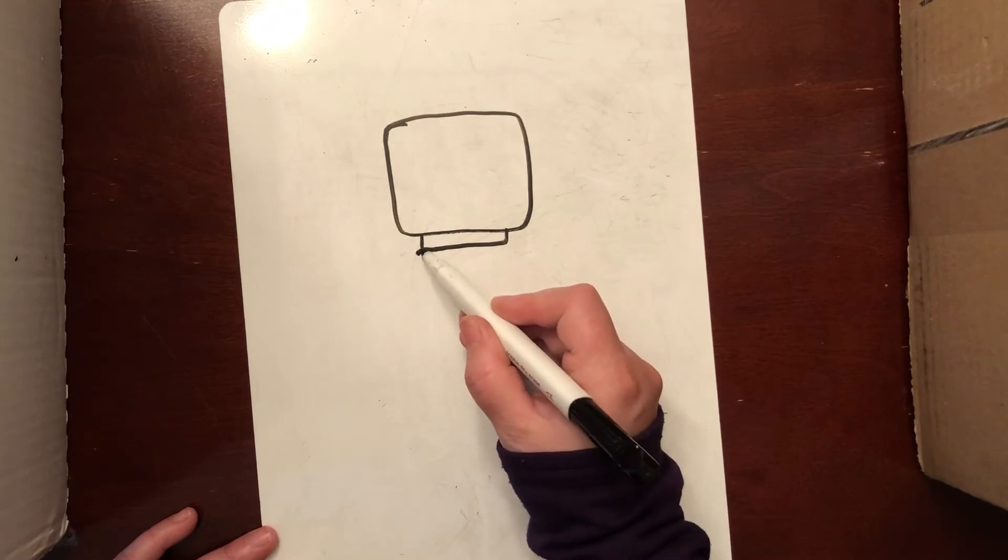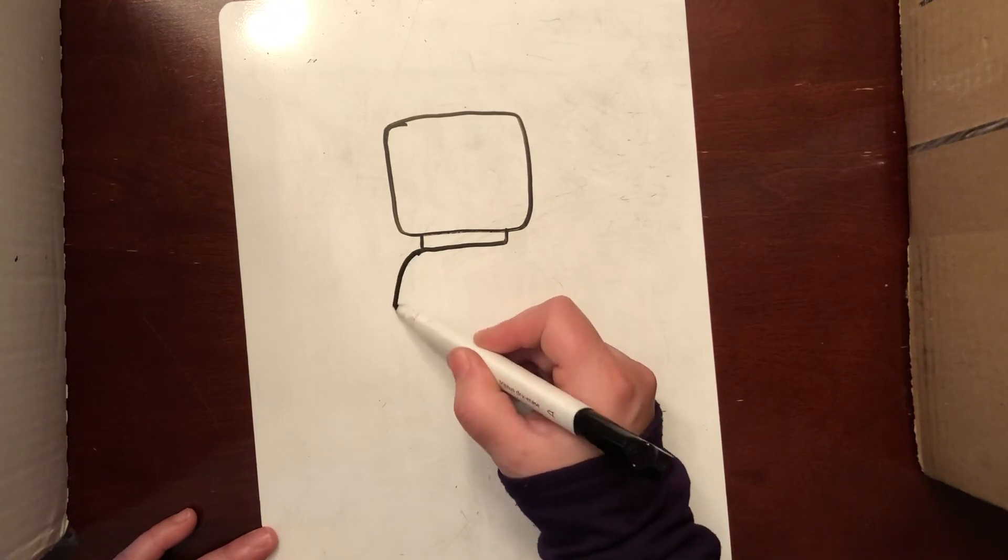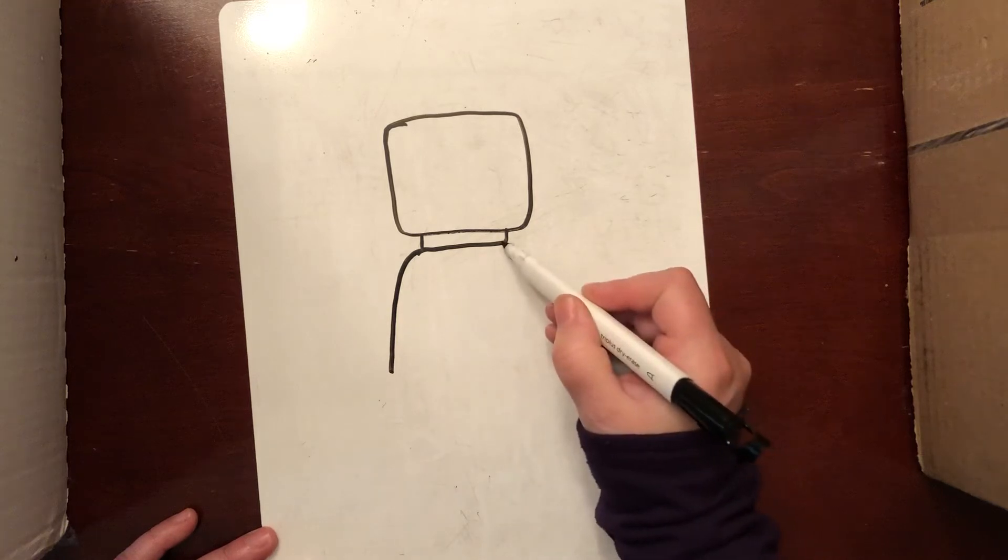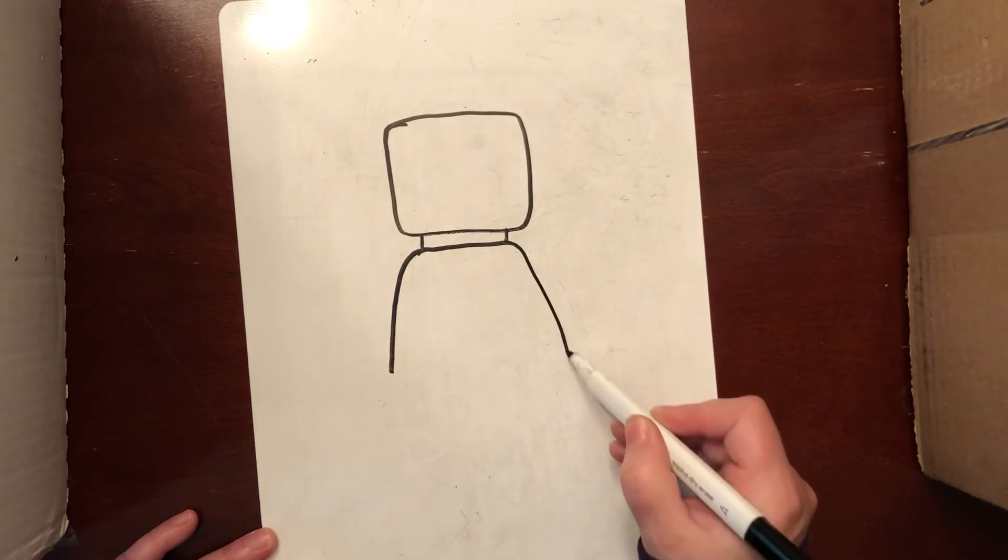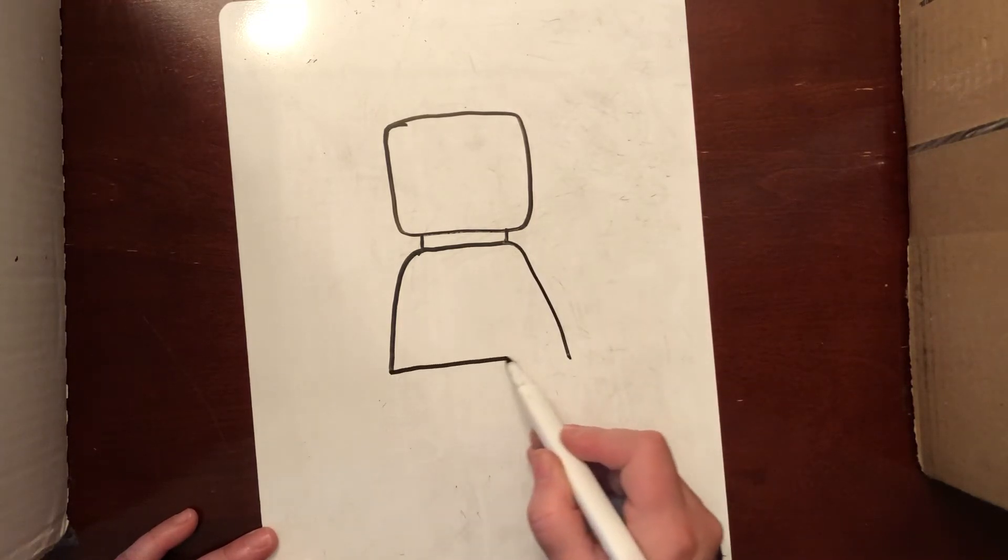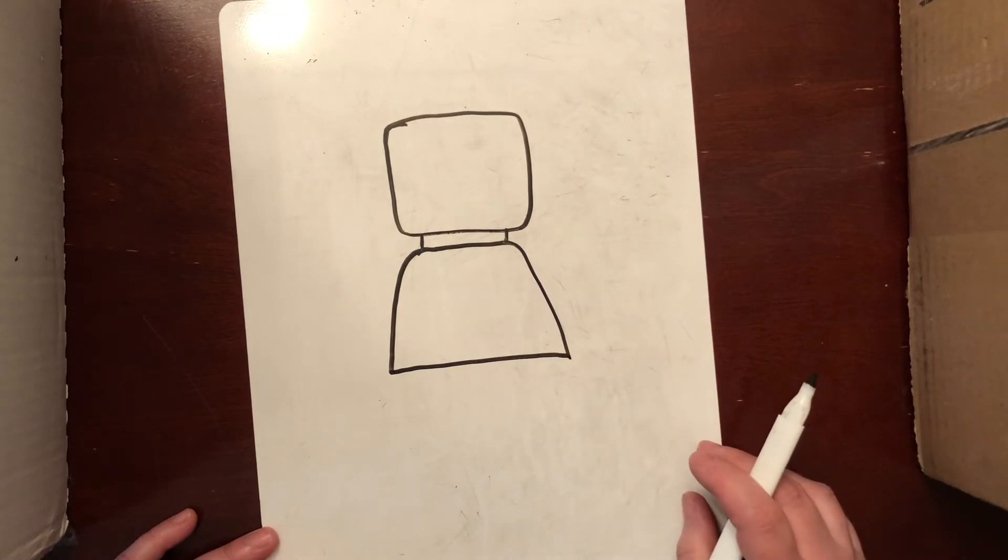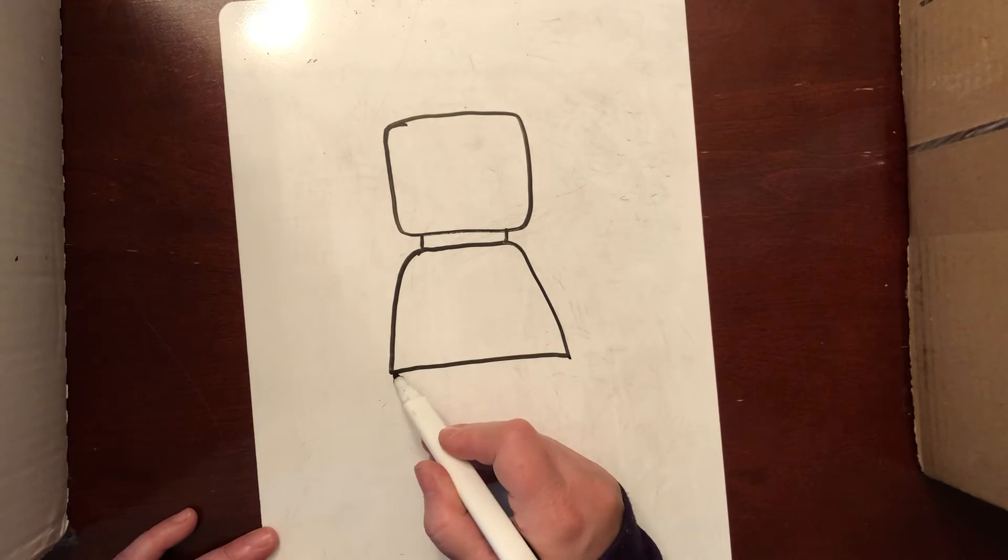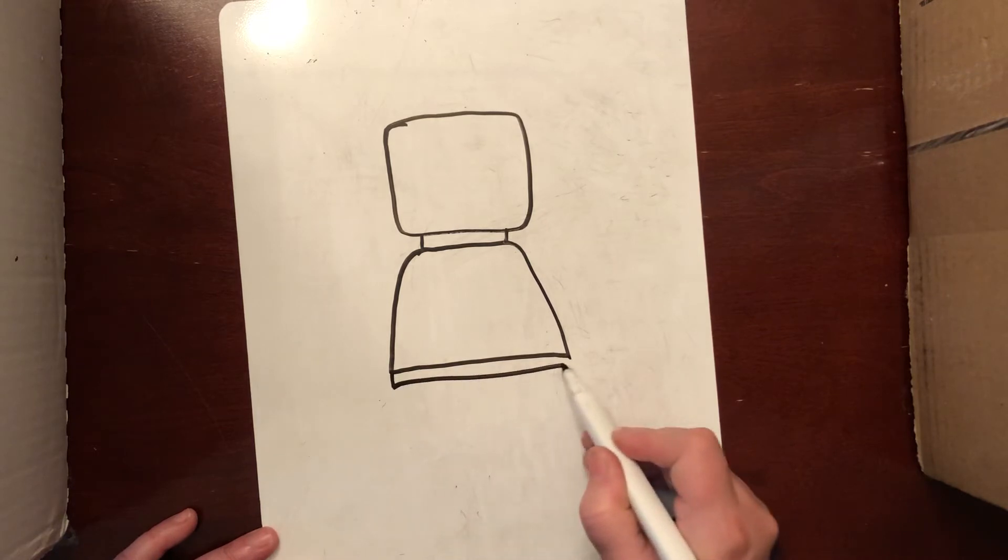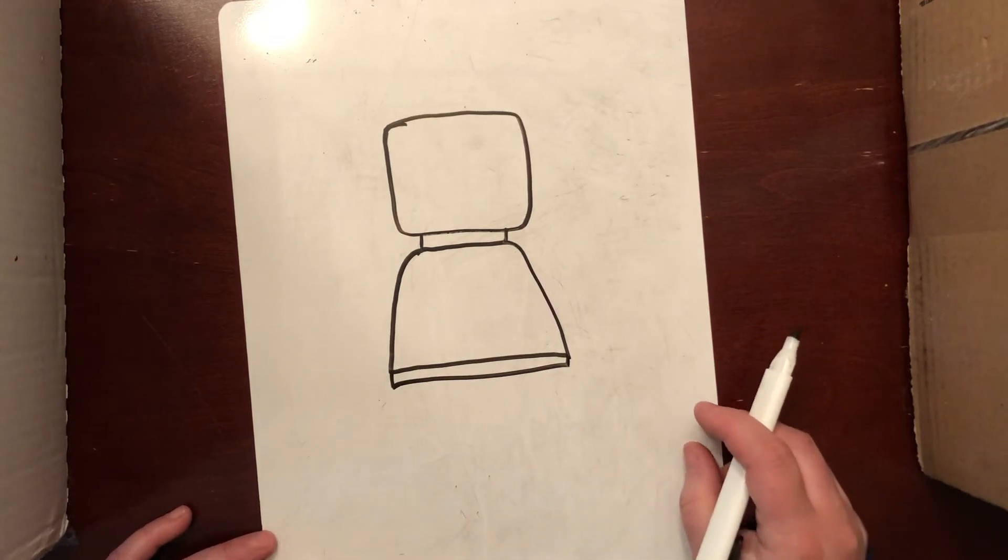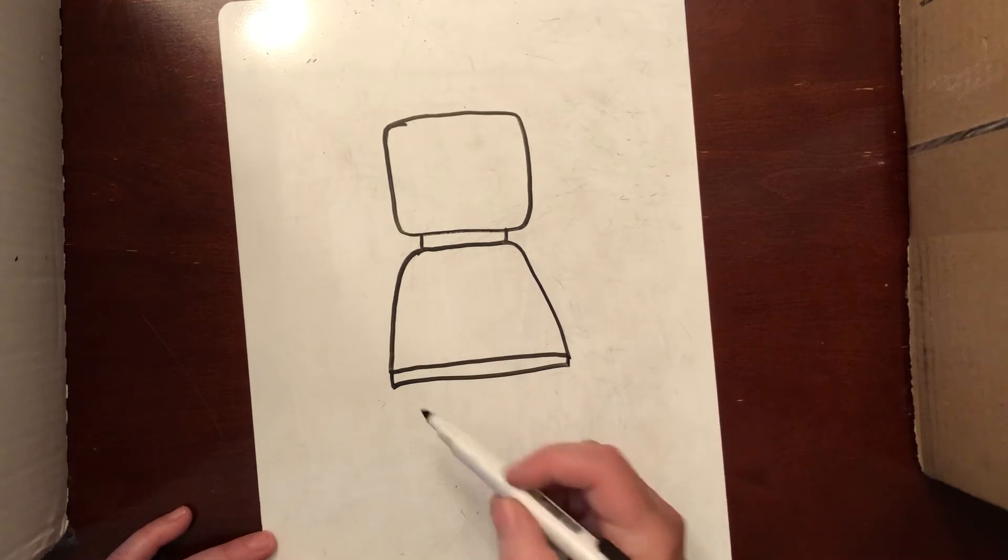I'm going to start on the body, and I'm going to come out to make a shoulder. Come out to make a shoulder, and I'm going to draw it straight across. This could be your character's belt, or you could make it just the bottom of their shirt. It's up to you.